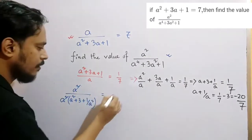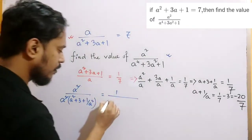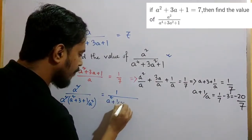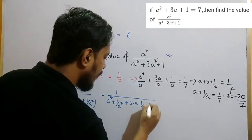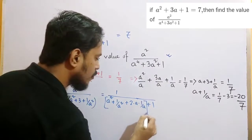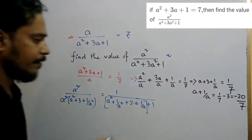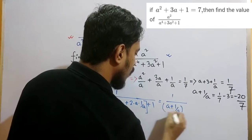We can write down that term as a squared plus 1 by a squared plus 2 into a into 1 by a plus 1. We can write down a squared by a plus 1 by a.